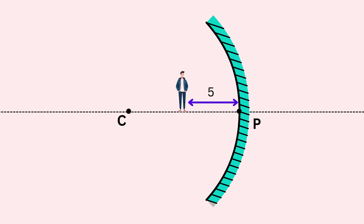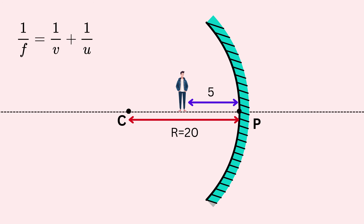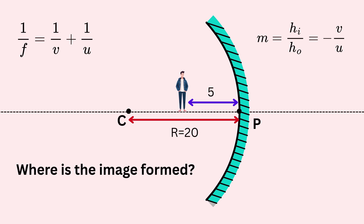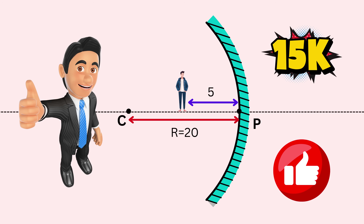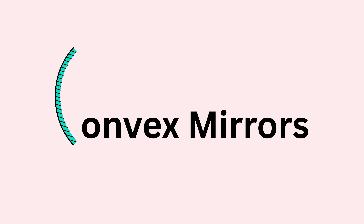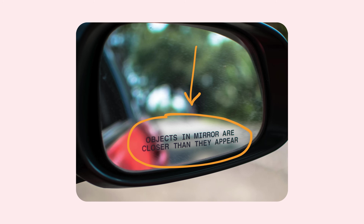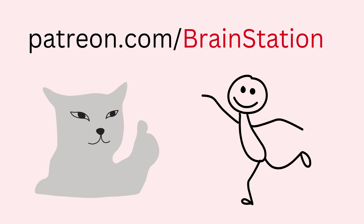Your turn: an object is placed 5 cm in front of a concave mirror, and the radius of curvature is 20 cm. Use the mirror formula to find the image position v, then use the magnification formula to find m. Tell me in the comments: where is the image formed, is it real or virtual, enlarged or diminished, erect or inverted? If this video gets 15,000 likes, I'll make the next video on convex mirrors — covering image formation, real-life uses, and why car mirrors say objects are closer than they appear.